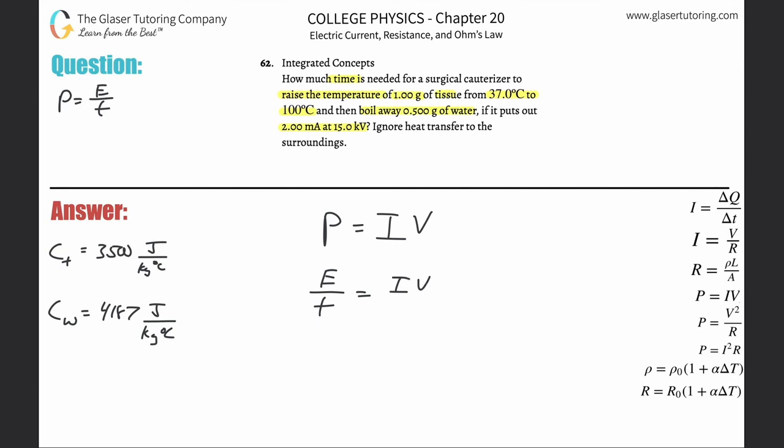This is going to be simply energy per time equals IV. Now what we need to do is we have to solve this for time. So just solve this for time, cross multiply, and there you go. I'm gonna just move this now over to the right hand side just to make it look nice.